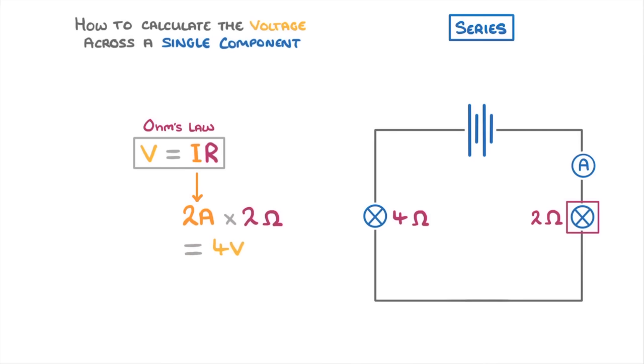To find the voltage across the other component, we could do the same thing again, or, because we know that the total voltage must be the same as the battery, which was 12 volts, we could just do 12 minus 4, to find that this other lamp must have a potential difference of 8 volts.